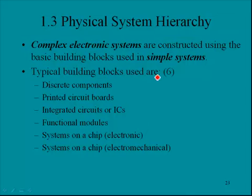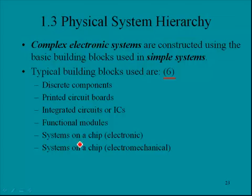In this section, we're going to look at the hierarchy — six different building blocks used in electronic systems. We'll go from discrete components, to printed circuit boards, to integrated circuits (ICs), to functional modules, to entire electronic systems on a chip, and then to entire electromechanical systems on a chip.